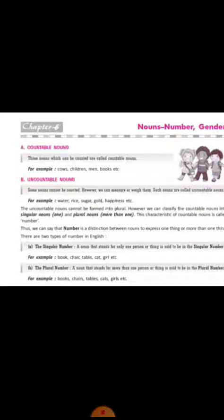As you know, countable nouns are the nouns which can be counted in number. For example, cows, children, men, books, etc. Jinko hum number mein count kar sakte hain, woh countable nouns hotte hain.